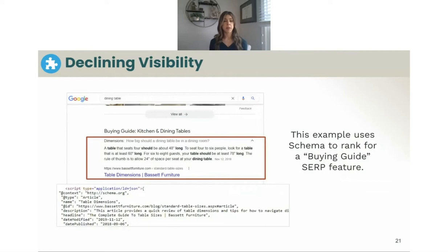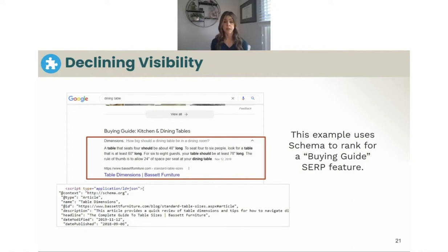Here's an example using the dining table search. One of the buying guides shows Bassett Furniture ranking for table dimensions. They are actually using schema, as you can see in the code below, to rank for a buying guide. This is a relatively easy code implementation for dev teams that can give you a good opportunity to rank for these types of results.